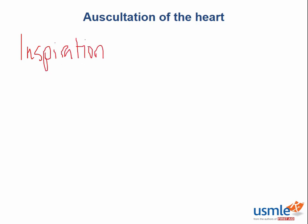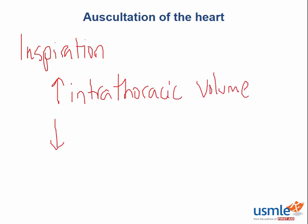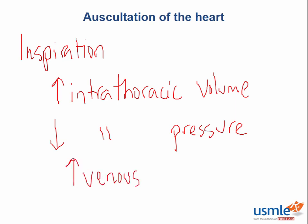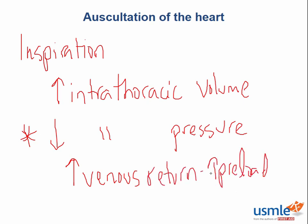The process of inspiration, or having the patient take a deep breath in, results in increased intrathoracic volume, which causes a relative decrease in intrathoracic pressure. This pressure gradient causes blood to return to the right side of the heart more readily, resulting in an increase in venous return as blood from the vena cava and the upper and lower extremities is shunted back into the right atrium. This increased venous return results in an increase in preload, and therefore an increase in blood flow across the heart valves, increasing the intensity of all cardiac murmurs involving the right side of the heart — particularly the tricuspid and pulmonic valves.